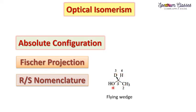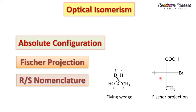A chiral carbon is attached with four different atoms or groups. These molecules have atoms or groups arranged differently in three-dimensional space, and their spatial configuration is defined by the absolute configuration. To define this absolute configuration, stereo descriptors like RS and DL nomenclatures are required. This 3D structure can be represented in a 2D plane using the Fischer projection, which is the two-dimensional representation of a three-dimensional molecule.